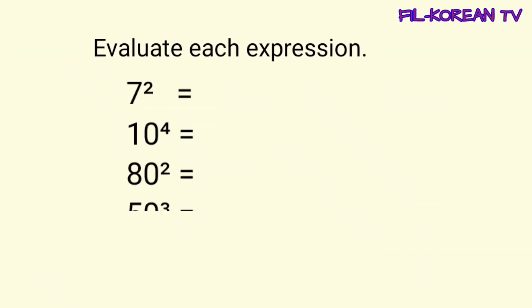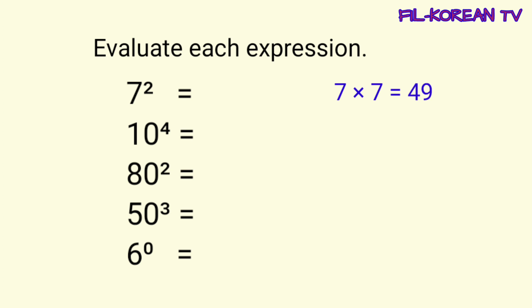Ngayon, sagutin natin itong isa pang activity. Evaluate each expression. Ibig sabihin, kukuha natin ang value ng bawat exponential notation. Number 1, 7 to the 2nd power. Ibig sabihin ito, dalawang ulit natin imumultiply ang 7 sa kanyang sarili. Ang value ng 7 to the 2nd power ay 49.